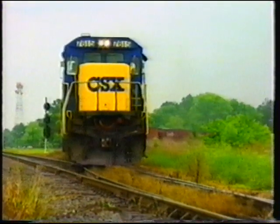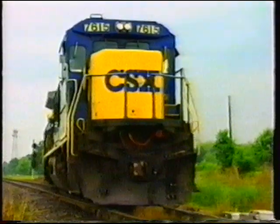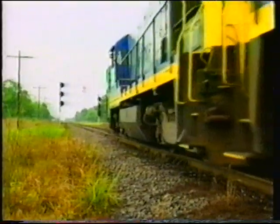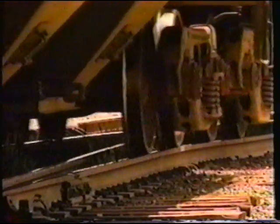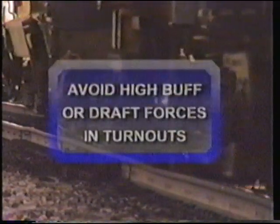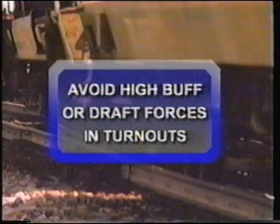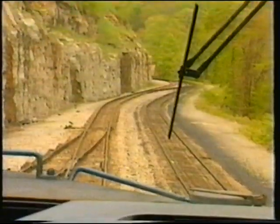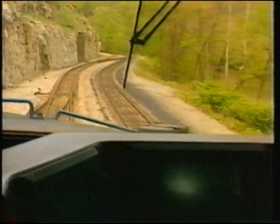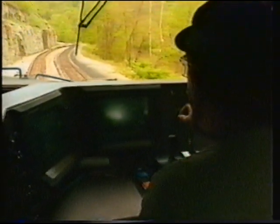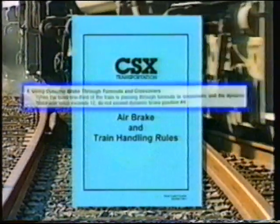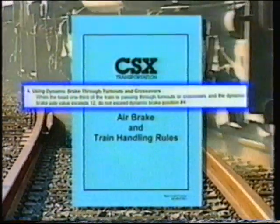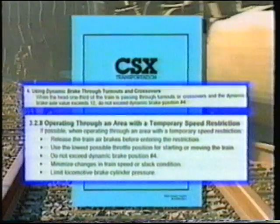Safe operation through a curve, switch, or turnout requires adherence to the designated speed so that the track can withstand the high lateral forces generated, avoiding wheel lift, wheel climb, or rail turnover. Particular care must be exercised to avoid high buff or draft coupler forces while negotiating a turnout, as high lateral forces can easily cause rail turnover, wheel lift, or wheel climb. CSX air brake and train handling rules address procedures for minimizing these forces when operating over switches and turnouts, as well as when entering temporary speed restrictions.